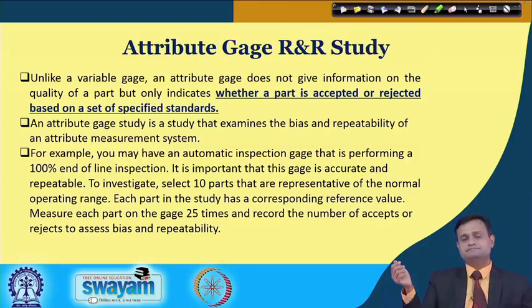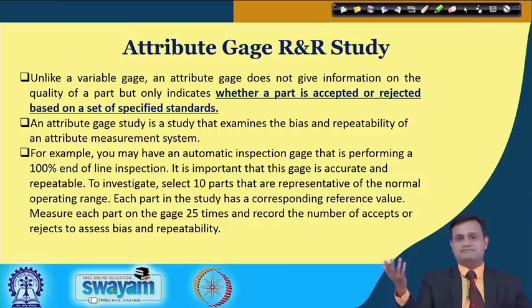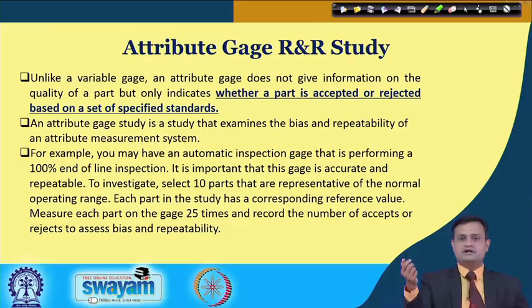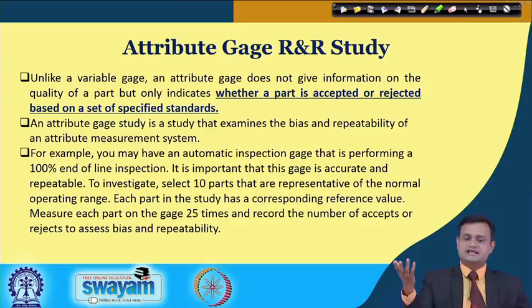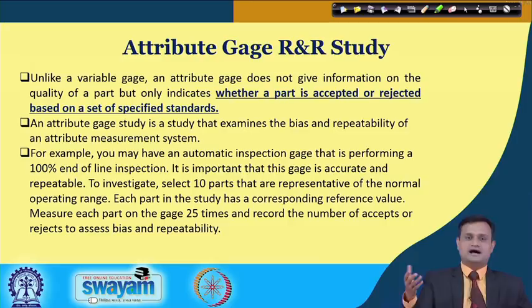If your quality characteristic is of the acceptable or rejectable type, you cannot conduct variable Gauge R and R — you must use attribute Gauge R and R. As an example, you may have an automatic inspection gauge performing 100% offline inspection, and it is important that this gauge is accurate and repeatable. To investigate, select 10 parts representative of the operating range, measure each part on the gauge 25 times, and record the number of accepts or rejects to assess bias and repeatability.